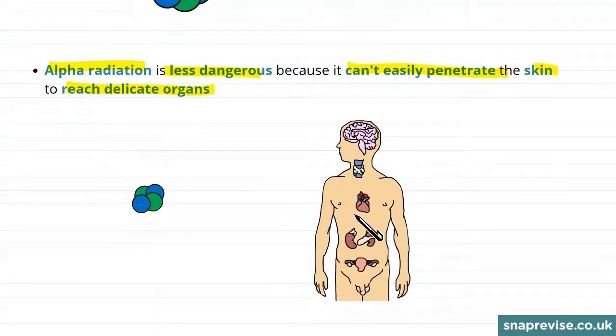So one of the main issues with radiation is if the radiation manages to damage one of our internal organs. Now alpha radiation struggles to penetrate past the skin. In a previous video we've mentioned how alpha radiation can be stopped even by a sheet of paper. So because the alpha radiation can't reach these delicate organs, it doesn't do as much damage.